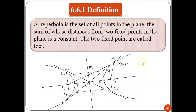For the definition — this is the shape of how the hyperbola looks like. A hyperbola is the set of all points in the plane, the difference of whose distances from two fixed points in the plane is a constant. The two fixed points are called foci, F1 and F2. You also have V1 and V2, which are the vertices, and the center.